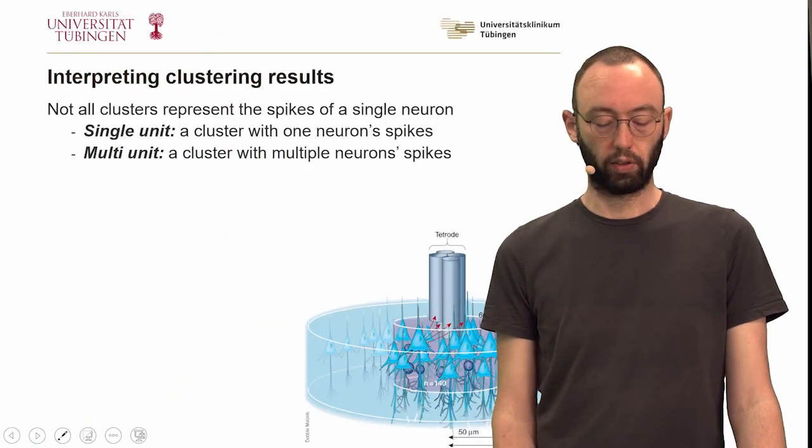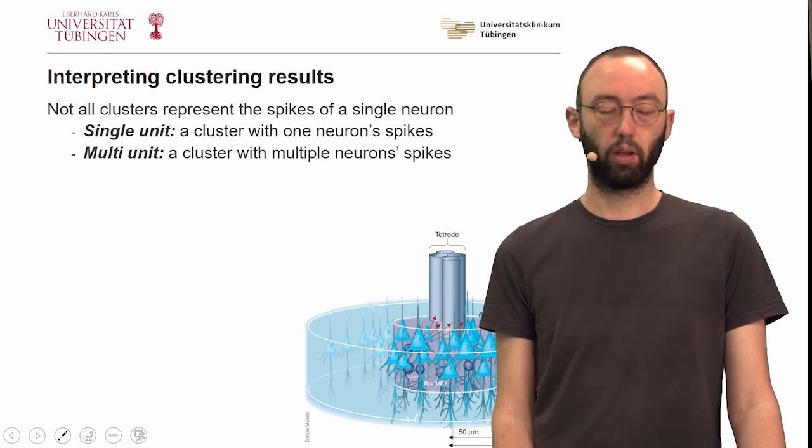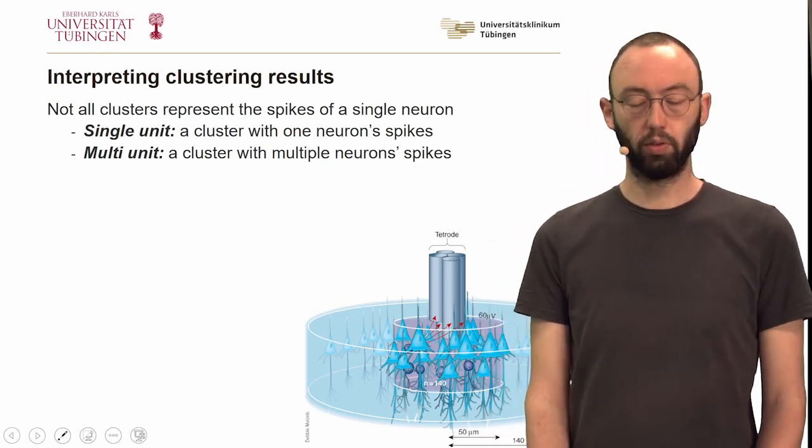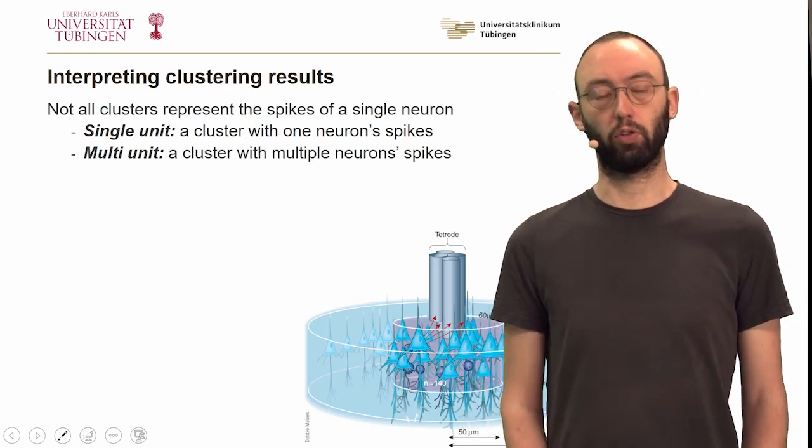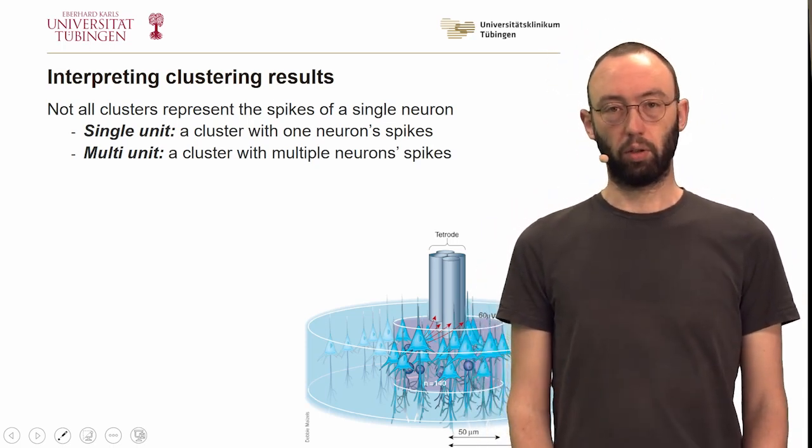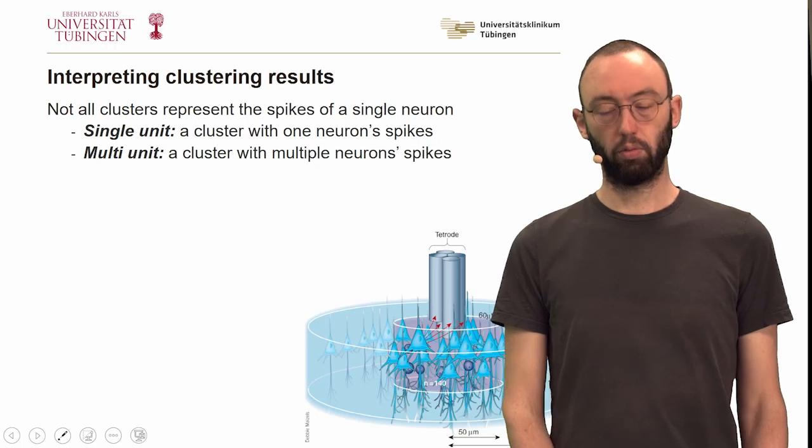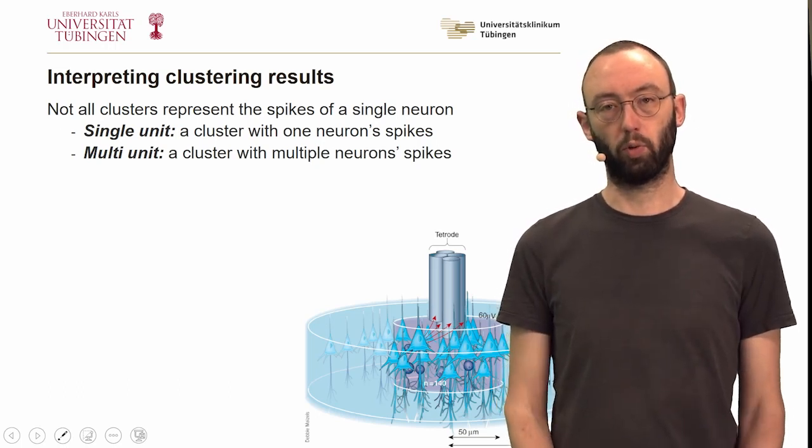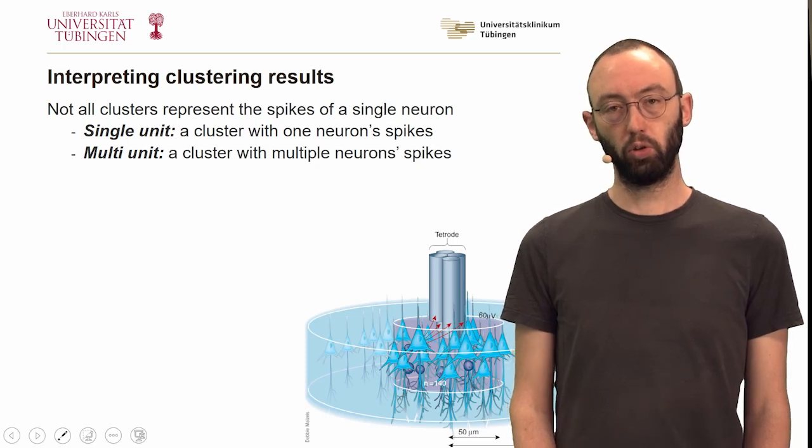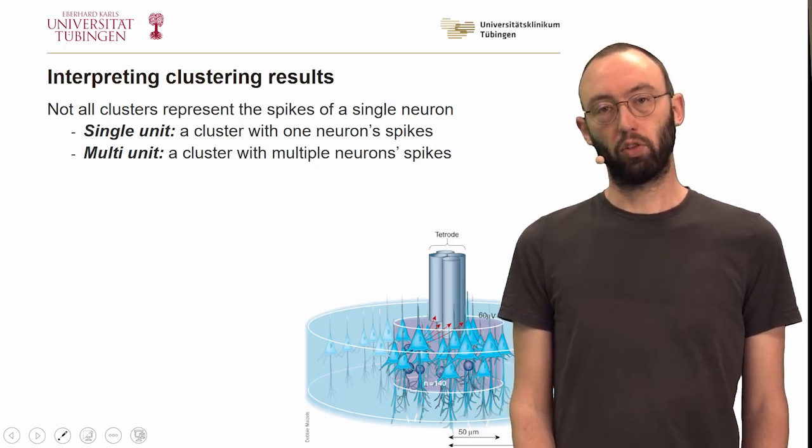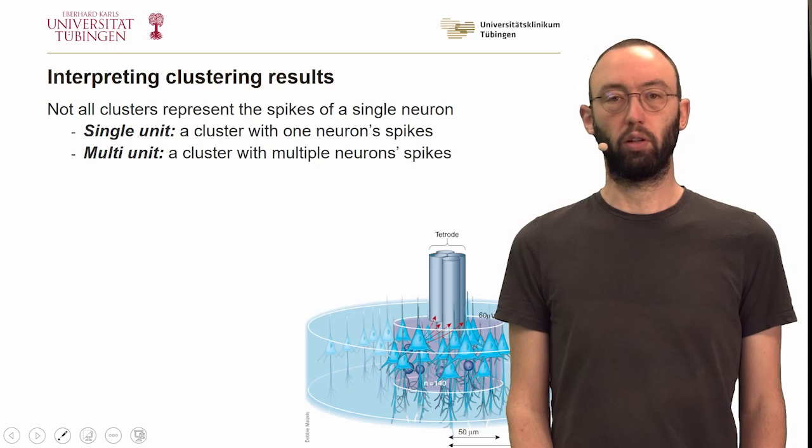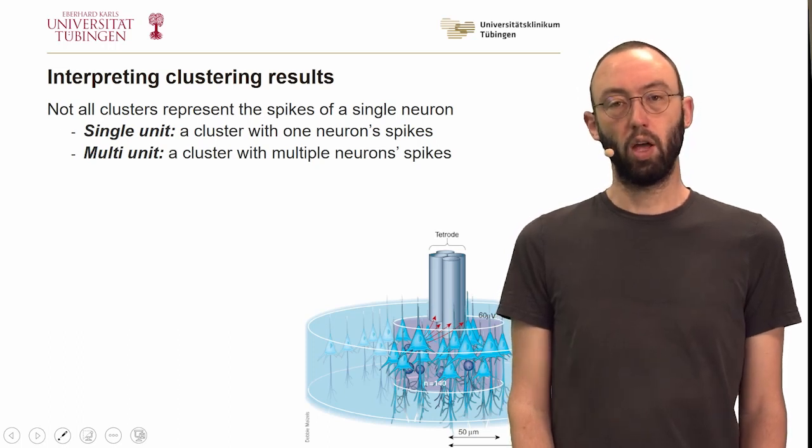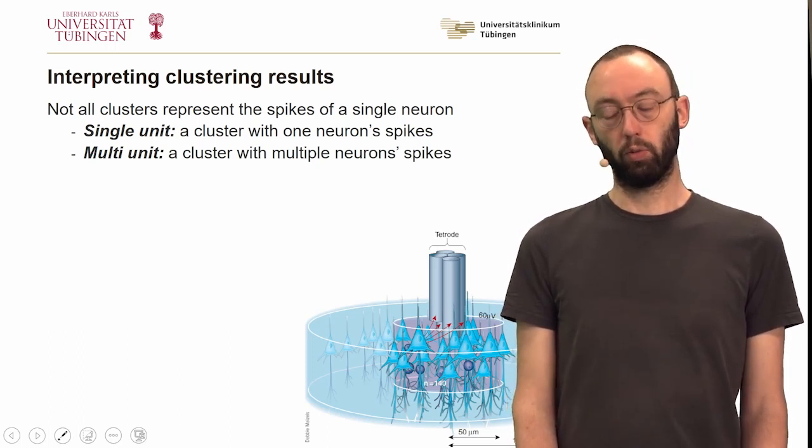How do we interpret these cluster results? Not all of the clusters necessarily represent the spikes of an individual neuron. There can be single unit clusters, where a unit really represents the spikes of one individual neuron, or multi-unit clusters, where signatures of multiple neurons have been grouped into a single cluster.